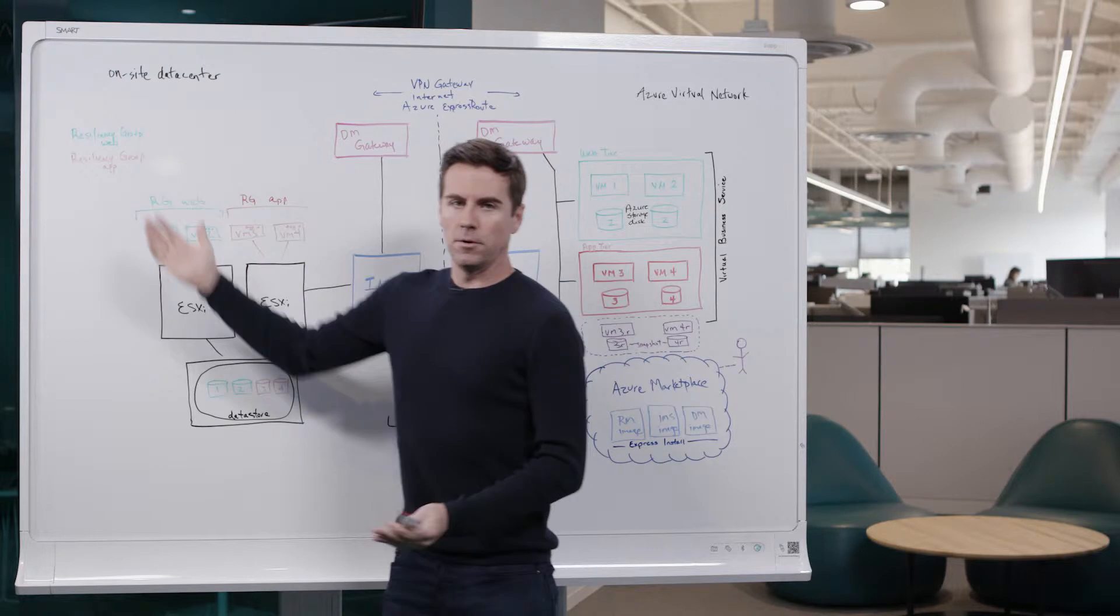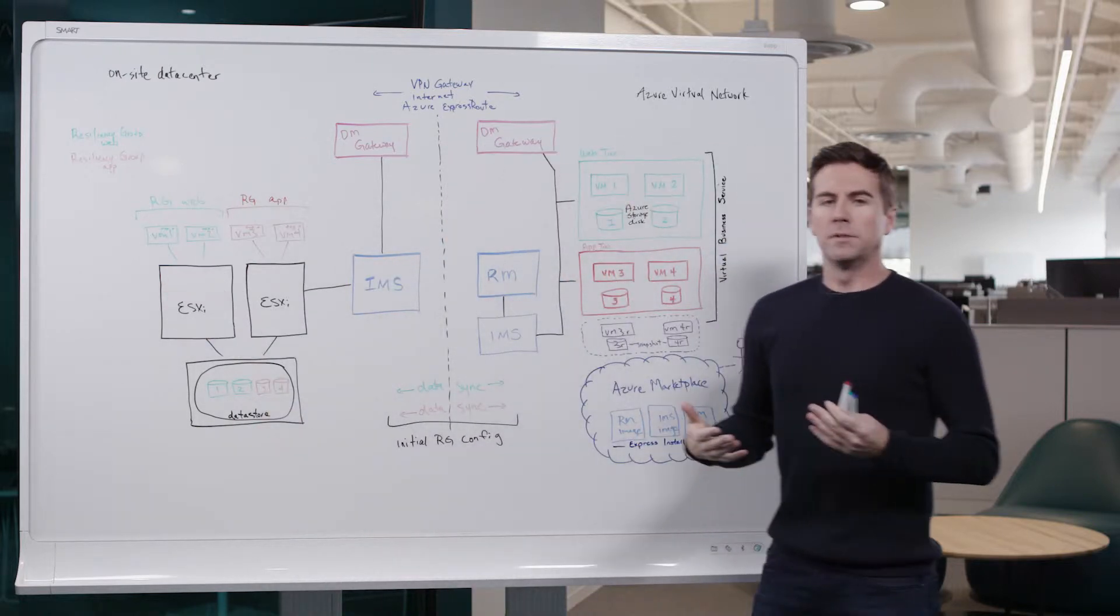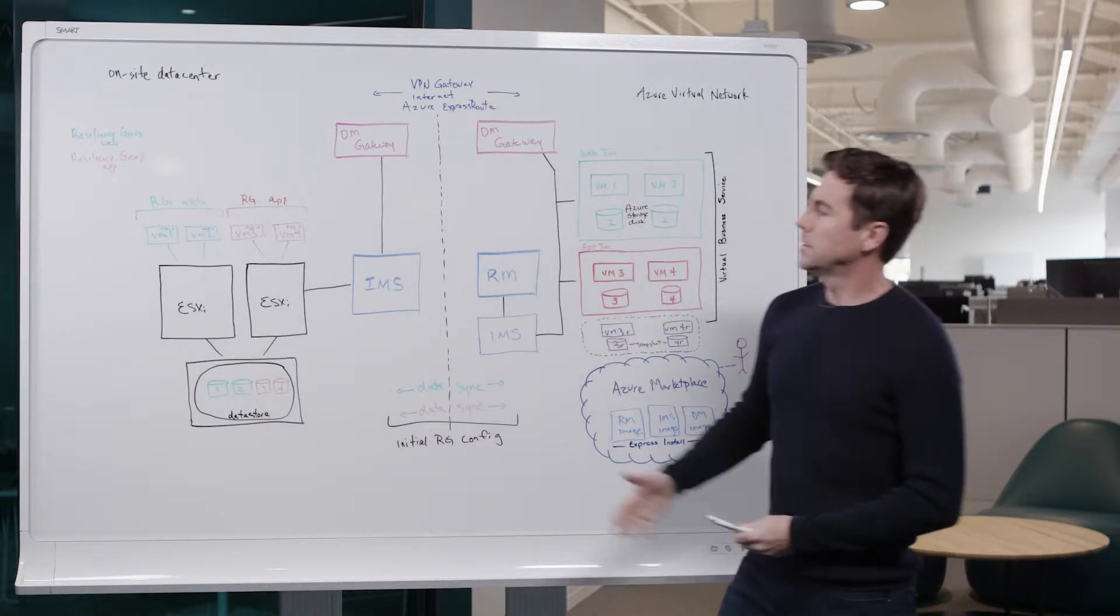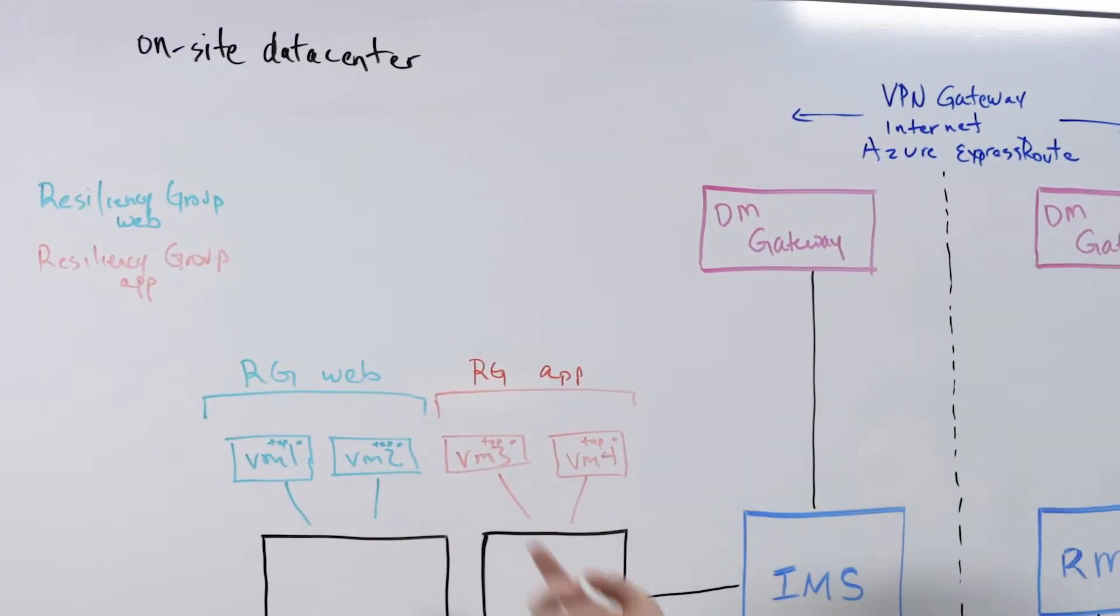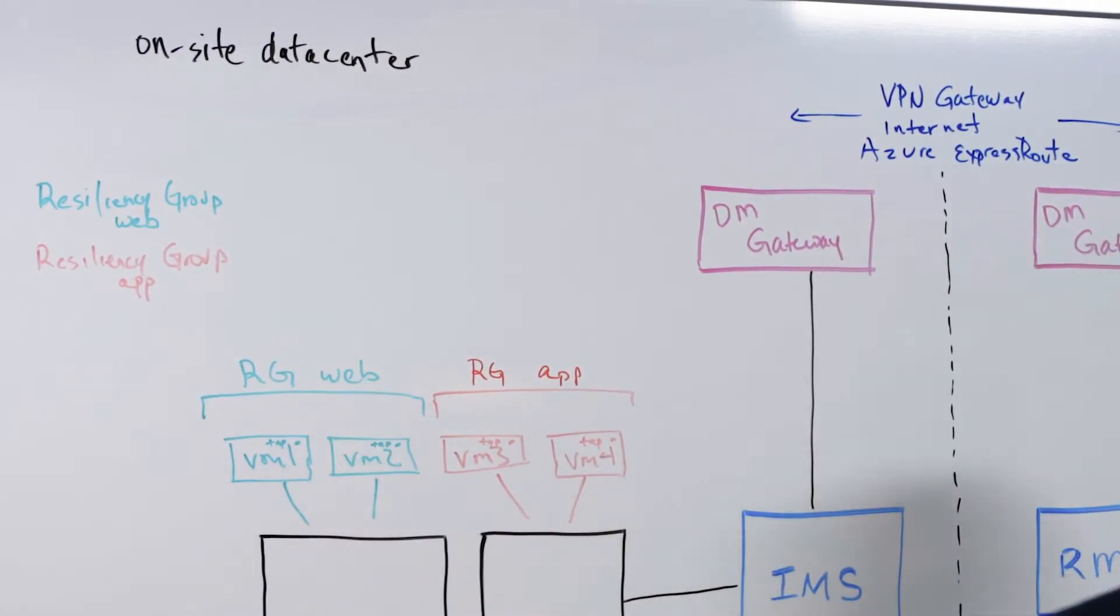Another thing to be familiar with is called the Resiliency Group. This is a Resiliency Platform construct that enables us to group applications in the way that they're used. We have a Resiliency Group for our web tier and one for our application tier, and those are grouped together as resiliency groups.